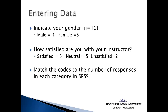Once you've determined your organization and coding for each variable, you collect your data and determine the number of individuals that fit into each category within each variable. For example, with a gender question among ten respondents, four males and five females indicated their gender. The next question might be how satisfied they are with their instructor, and of ten respondents, three might say satisfied, five might say neutral, and two might say unsatisfied. We continue that for each question or variable we're collecting.